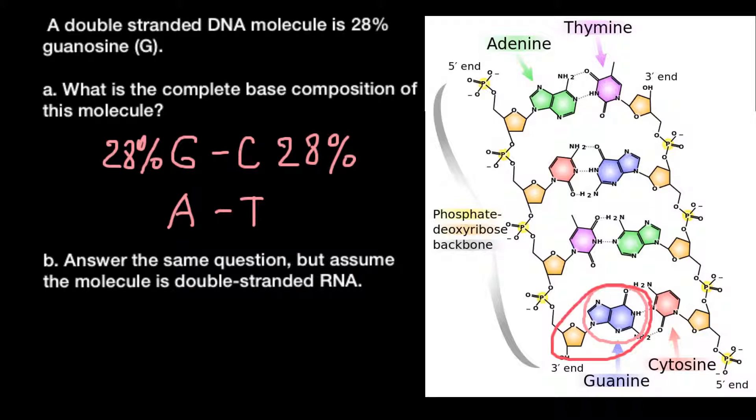Half of this 44%, or 22%, would be adenine and 22% would be thymine. As you see, this is a very easy problem.